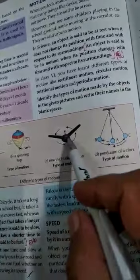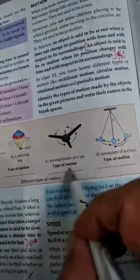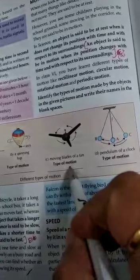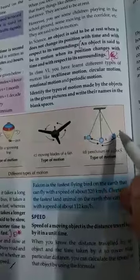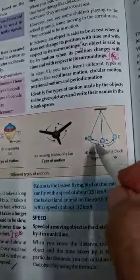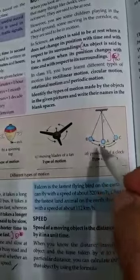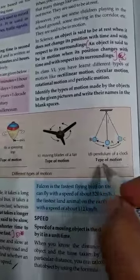Fan hai, ek jagah pe fix hai aur ghoom raha hai, to woh apka kehlata hai rotatory motion ya rotational motion. Aur yeh jo pendulum hai, iska time fix hai. Yahan se yahan tak, A se B aur B se C tak jane mein, uska time fix hai, to woh apka kehlai ga periodic motion.